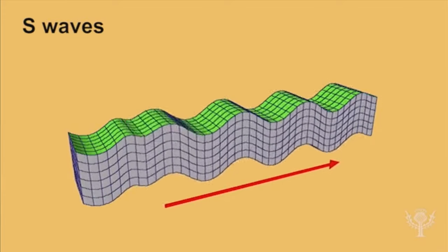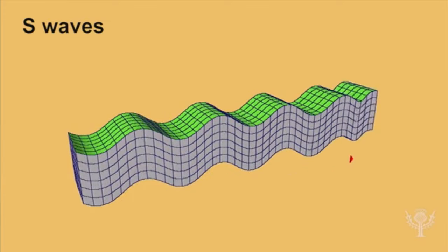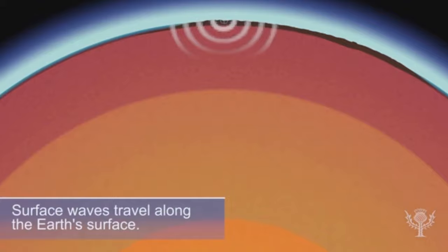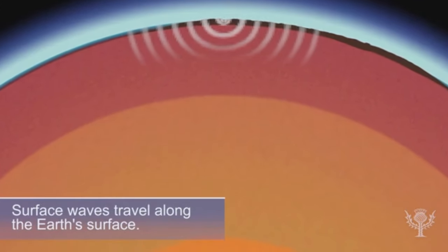Unlike P waves, S waves can travel only through solid materials. After both P and S waves have moved through the body of Earth, they are followed by surface waves, which travel along Earth's surface.